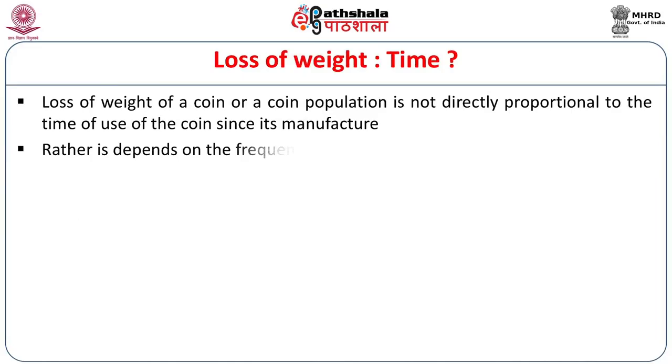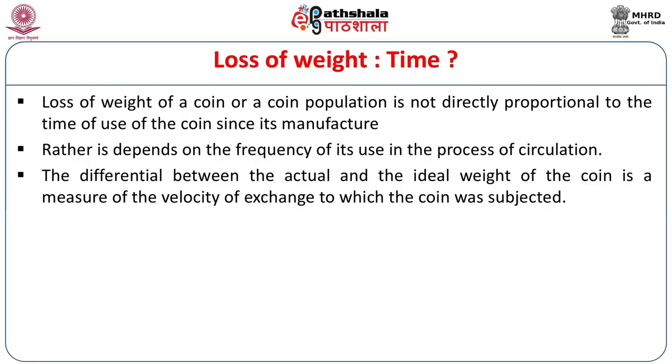The average weight declines regularly because the average loss of weight is the same per unit of time, say a year. The curve becomes flatter much more rapidly because the square of standard deviation increases regularly with time. However, the loss of weight also depends on the frequency of use in circulation — if a coin is in circulation longer it will lose more weight, but every coin will not have a similar history. One coin may circulate heavily while another goes into savings, so weights will vary.